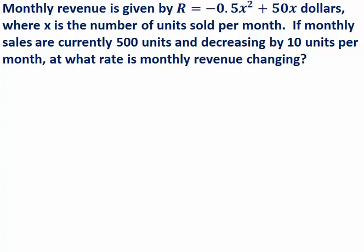In this case, our quantities will be monthly revenue for a company and the number of units sold per month by that company. So we have a formula given to us that tells us the relationship between the number of units sold per month and the monthly revenue.